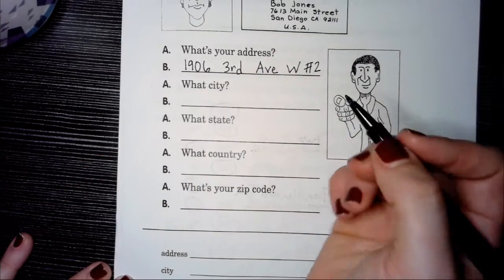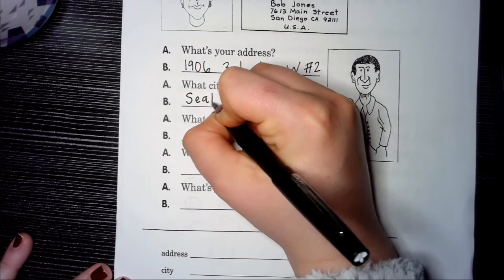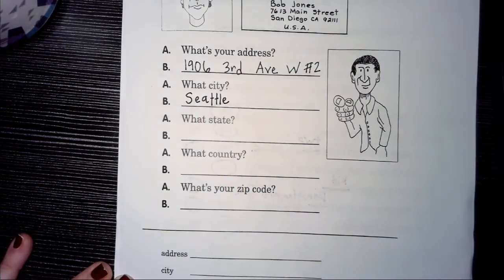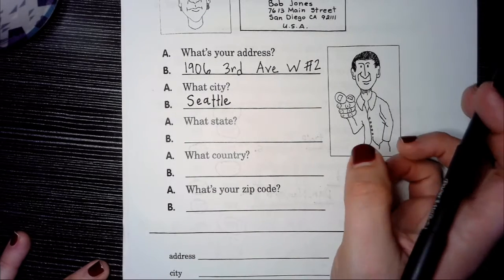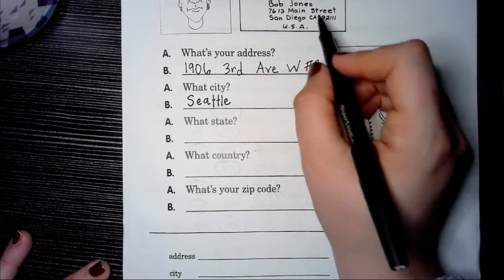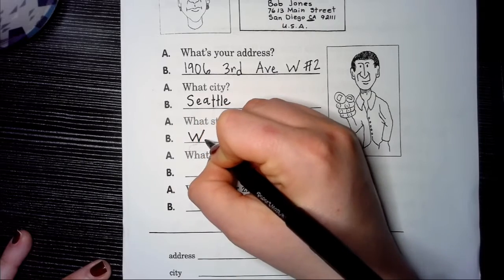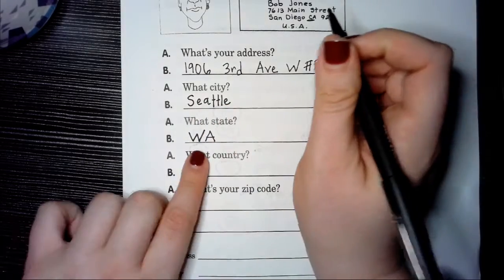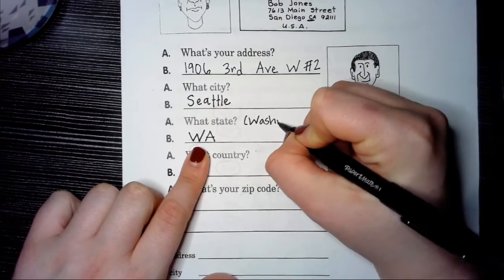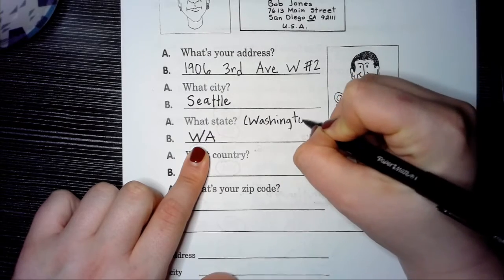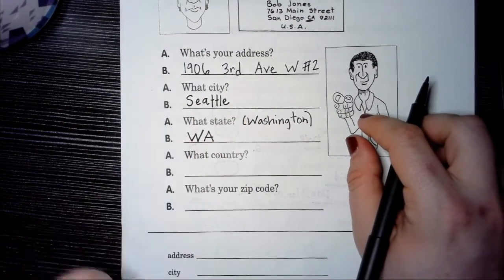What city? For me the city is Seattle. A: What state? What state are we in? Bob Jones lives in California, we live in Washington. When you write the address you can just write big W big A, this means Washington, but I'll write it here in big letters. But you see Washington is very long, so just WA, easy.